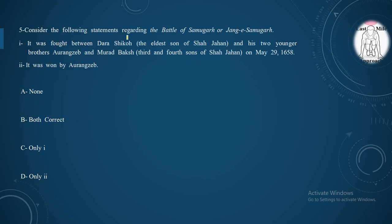Moving to our fifth question: Consider the following statements regarding the Battle of Samugarh or Jang-e-Samugarh. First statement: It was fought between Dara Shikoh, the eldest son of Shah Jahan, and his two younger brothers and four sons of Shah Jahan on May 29, 1658. Yes, it is correct. It was fought between Dara Shikoh and his two younger brothers, Aurangzeb and Murad Bakhsh. Second statement: It was won by Aurangzeb. Yes, it is also correct. So option B, both statements are correct.